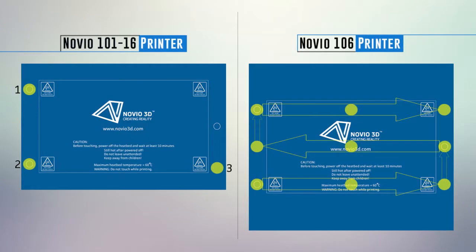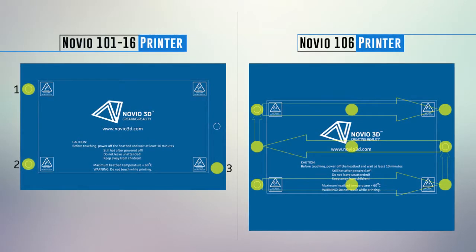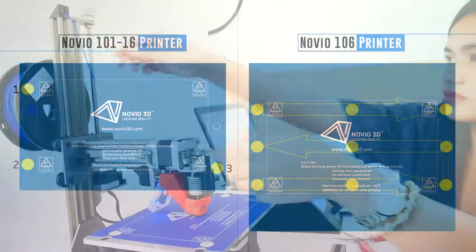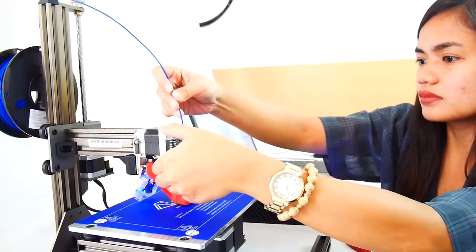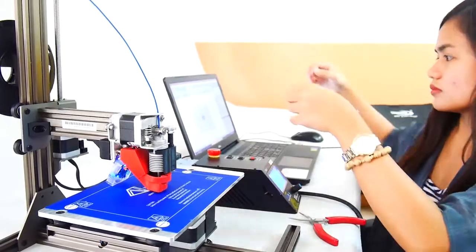This will be the reference distance for the three mapping points of Novio 101 Printer and Linear Leveling of Novio 106 Printer.